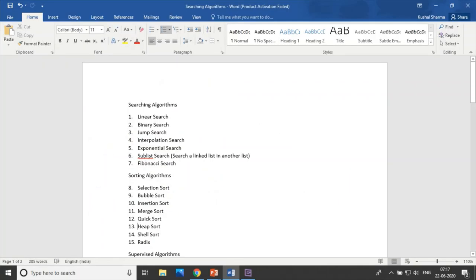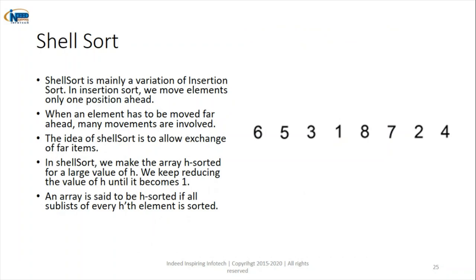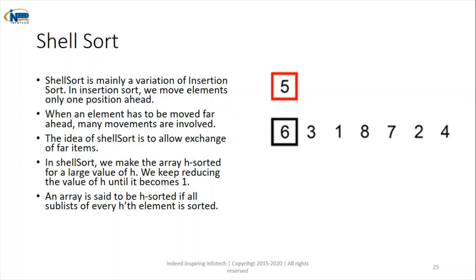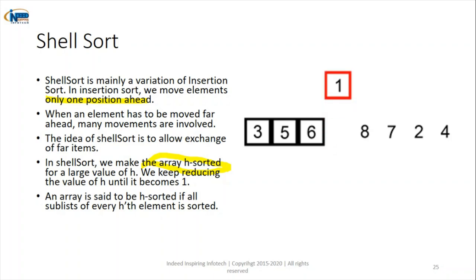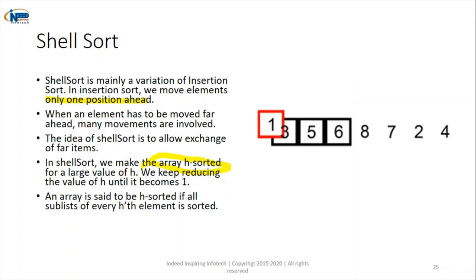The fourteenth algorithm is shell sort, which is a variant of insertion sort. In insertion sort, elements are moved one position ahead, but in shell sort we make the array gap-sorted. The gap can be a number like four or five. We take a gap value and keep reducing it until it becomes one, so the whole array becomes sorted. This variant of insertion sort is called shell sort.